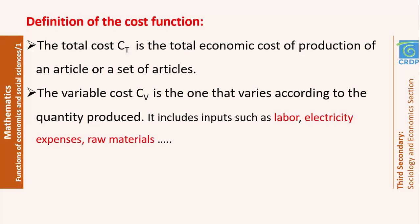The cost function is made up of the variable cost, which is one that varies according to the quantity produced, such as labor, electricity expenses, and raw materials. You know that the raw materials needed to produce one smartphone is not the same as the quantity of raw material used for 1,000 smartphones. So, the more items we're producing, the more raw materials we'll need. Such cost depends on the quantity produced — this is why we call it the variable cost.